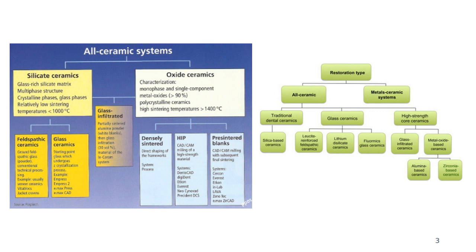Both can be fabricated using the analog method, and there are different types of layering porcelain depending on the substructure used. For all-ceramic restorations using traditional dental ceramics, we can have silica-based ceramics. For glass ceramics or glass-infiltrated ceramics, we can use leucite or reinforced feldspathic ceramics, lithium disilicate ceramics — these are the pressable ceramics — or fluormica glass ceramics.